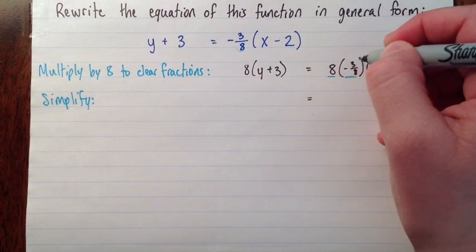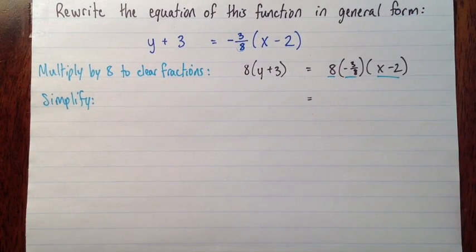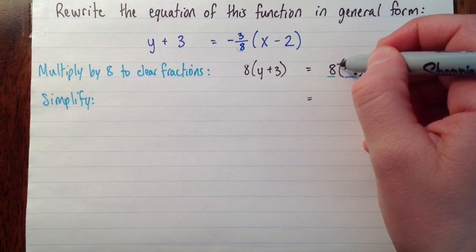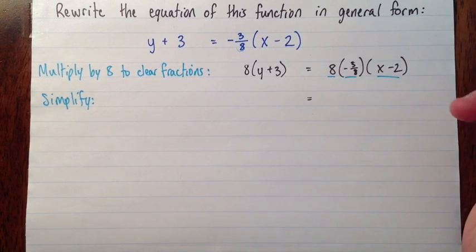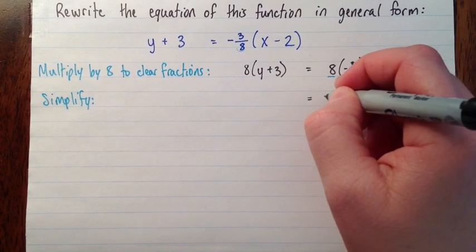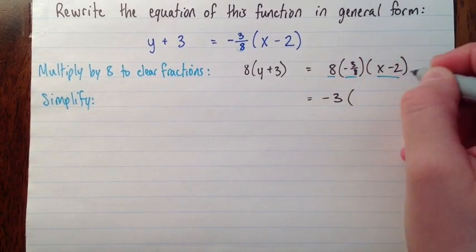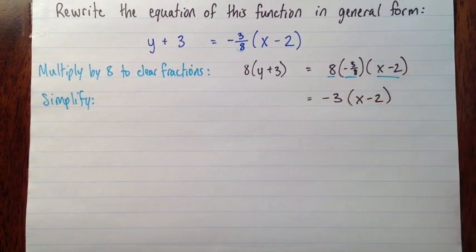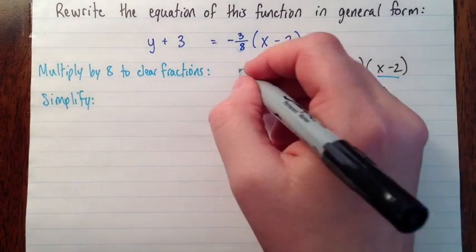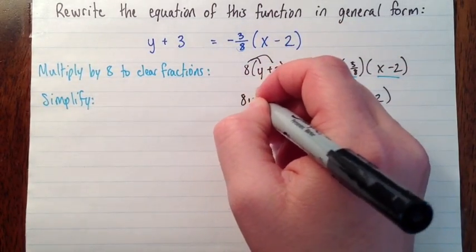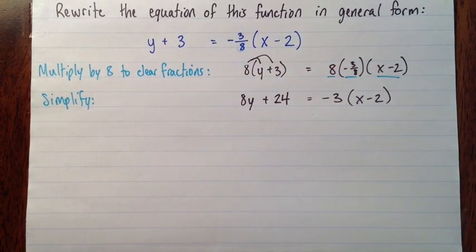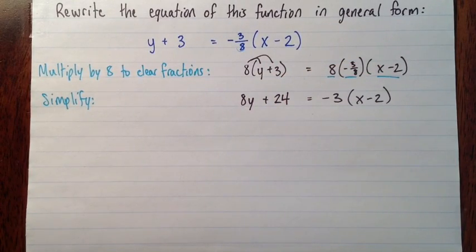Okay, so here we have 8 times negative 3 over 8. You can multiply fractions any way you like as long as you get negative 3. The easiest way to think of it is this is negative 3 divided by 8 times 8. So those undo each other. So we just have negative 3 here. Then we have that times x minus 2. And then over here, I'll distribute this right now. So I'll have 8y plus 24.